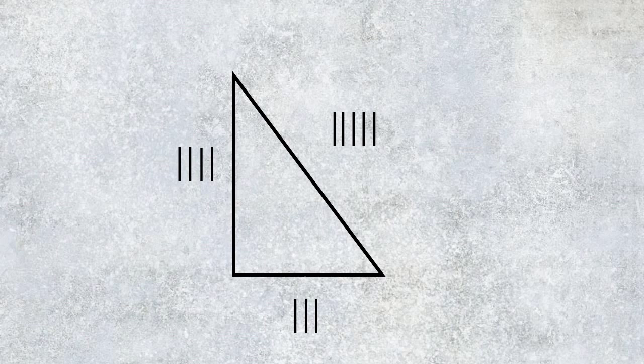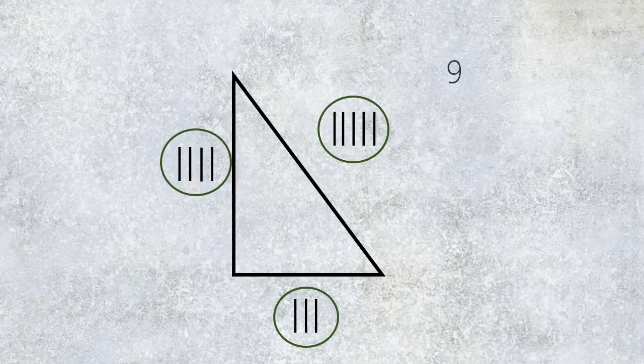Conveniently, the numbers 3, 4, and 5 work out perfectly to prove this, as 3 squared, or 9, plus 4 squared, 16, equals 25, which is 5 squared.